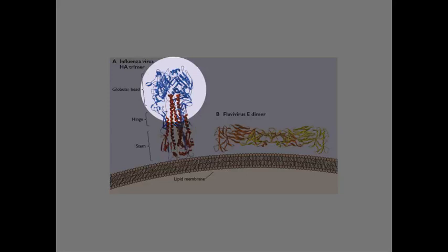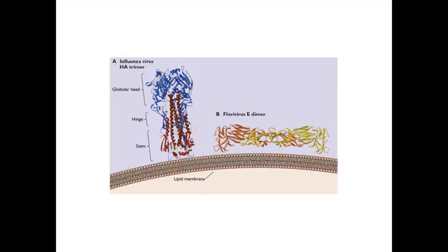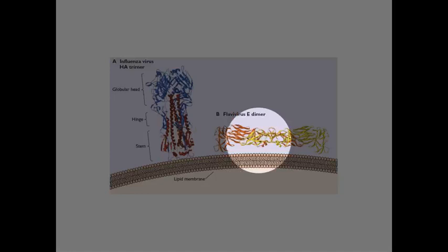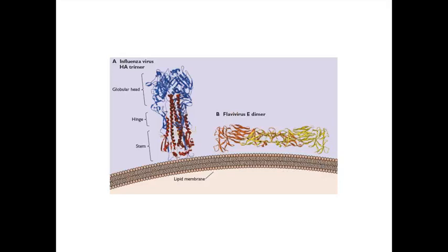Here on the left is an example of the influenza virus glycoprotein embedded in the viral membrane. This is called the hemagglutinin, and it's an extremely important protein for the virus — without it, it would not be infectious. It's what is used to attach to the cell receptor. Other viral glycoproteins can be arrayed parallel to the membrane, like this flavivirus glycoprotein. And they both work to attach to cell receptors.